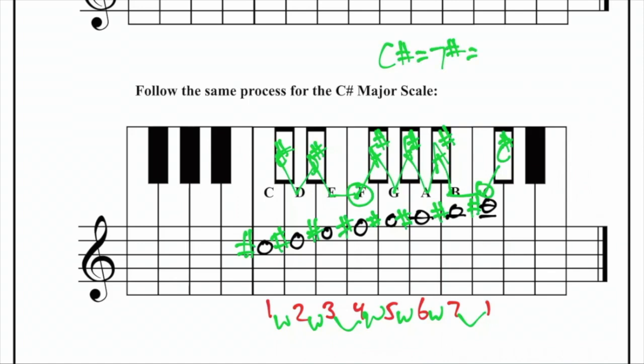The order of the sharps are, as we memorized: F-sharp, C-sharp, G-sharp, D-sharp, A-sharp, E-sharp, and B-sharp.